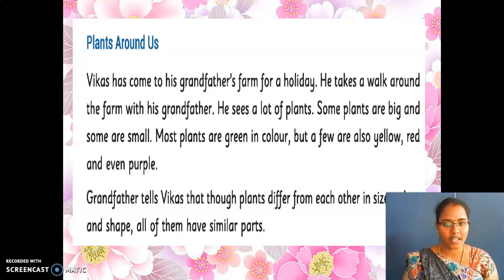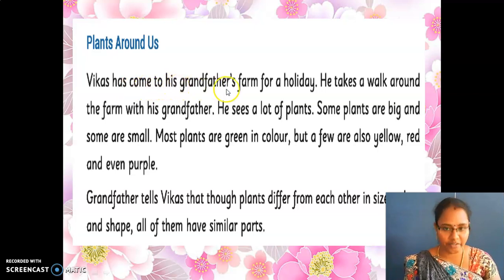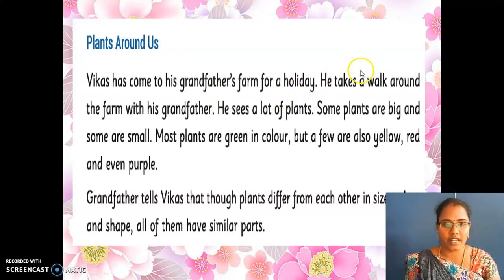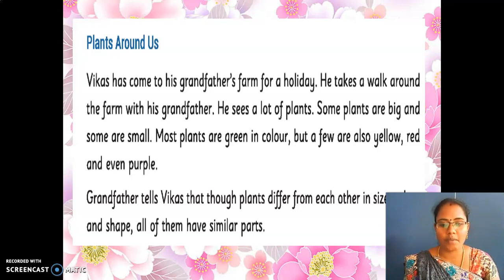Are you all ready to read, my dear children? Read this passage. If you are reading, you have to keep your fingers one by one. Plants Around Us. Vikas has come to his grandfather's farm for a holiday. Here they have a full stop, so you have to stop reading and then continue with the new sentence. He takes a walk around the farm with his grandfather. He sees a lot of plants. Some plants are big and some are small. Most plants are green in color but a few are also yellow, red and even purple. Grandfather tells Vikas that though plants differ from each other in size, color and shape, all of them have similar parts.